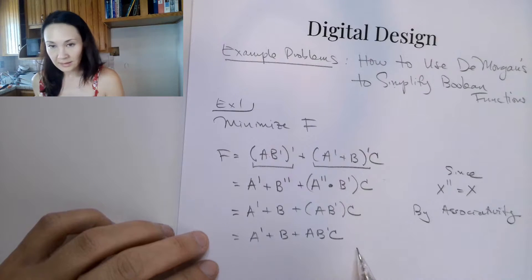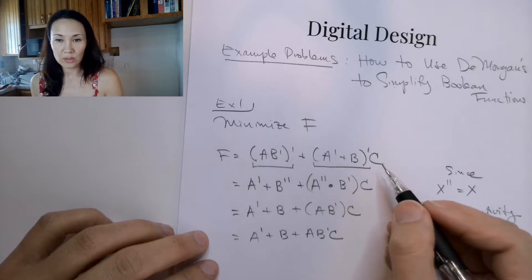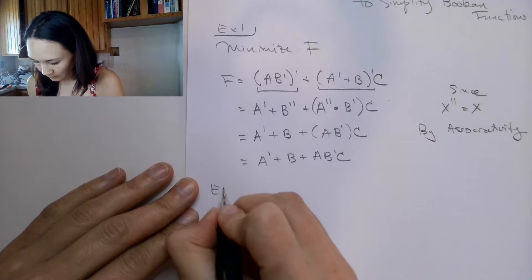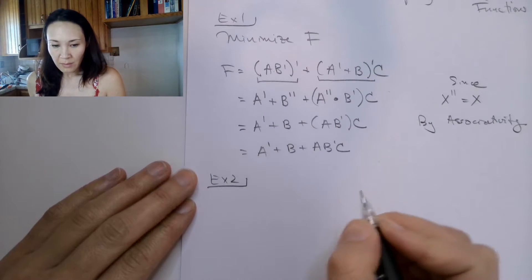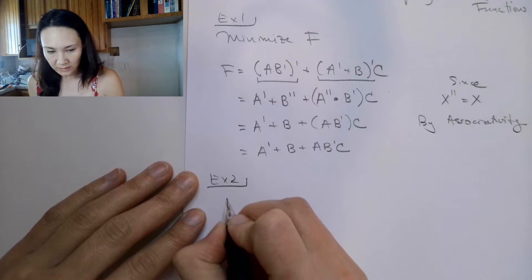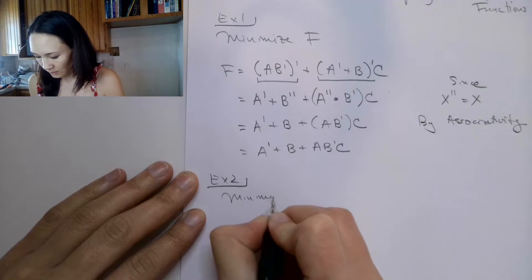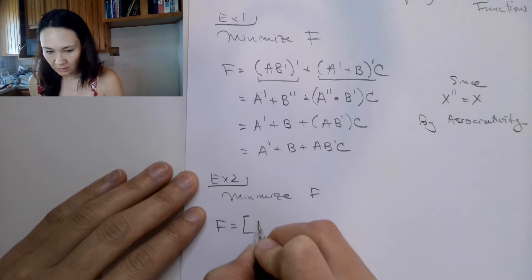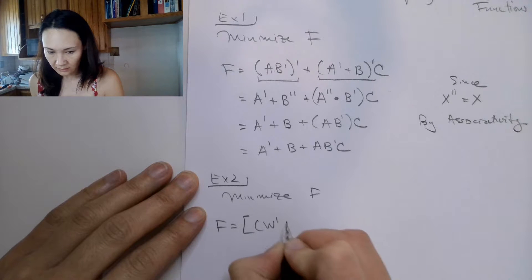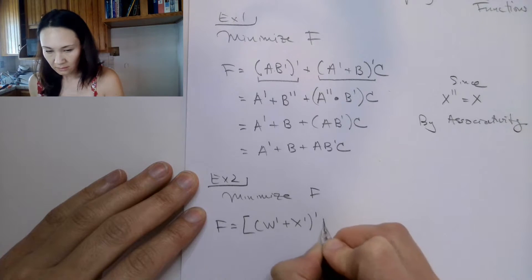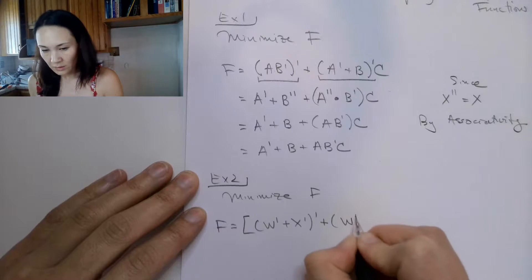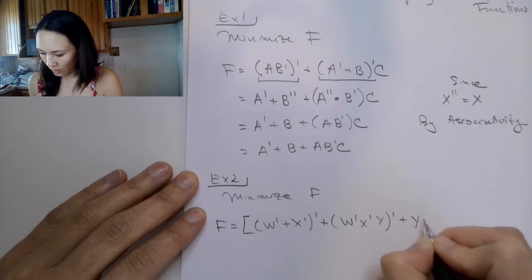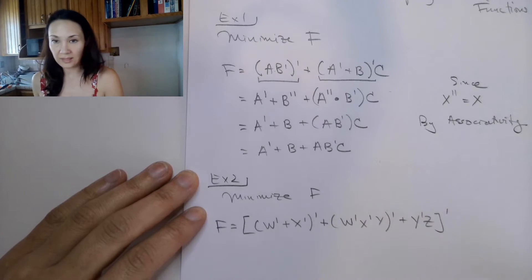And this is the simplification of the original function. Now for another example: suppose we want to minimize f, where f is (w' OR x')' OR (w'·x'·y)' OR (y'·z)', and the whole thing gets NOTed.